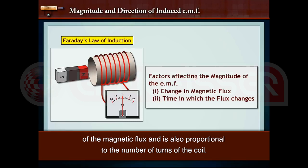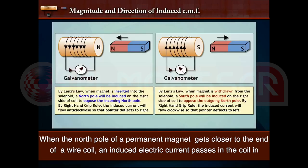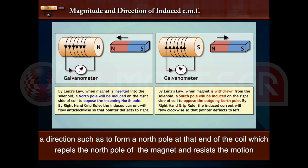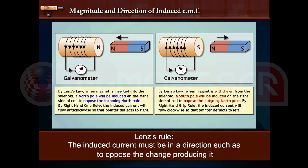When the north pole of a permanent magnet gets closer to the end of a wire coil, an induced electric current passes in the coil in a direction such as to form a north pole at that end of the coil which repels the north pole of the magnet and resists the motion.